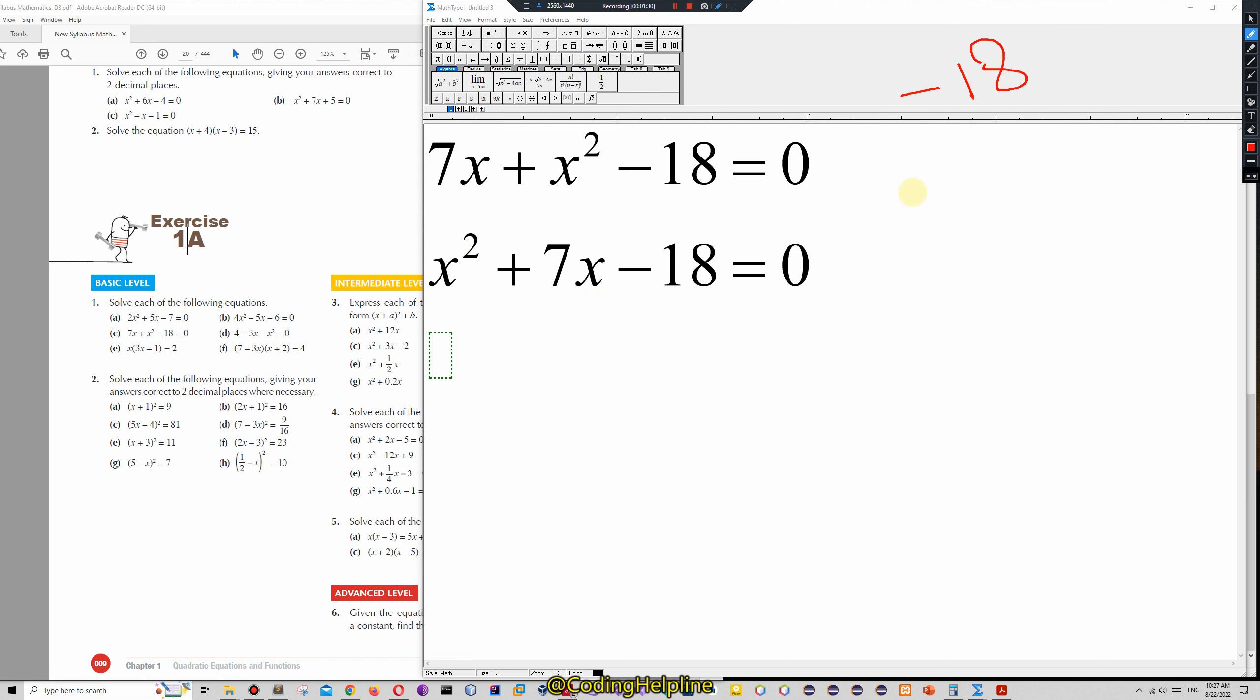We need minus 18. 18 multiplied by 1, we cannot get a pair. 9 multiplied by 2, yes, we can get a pair.